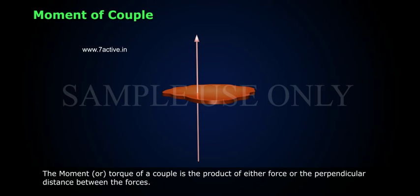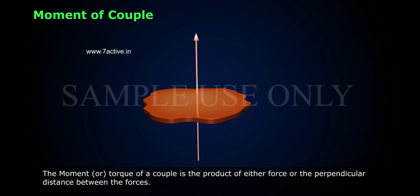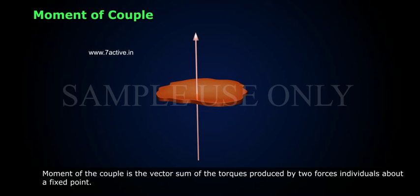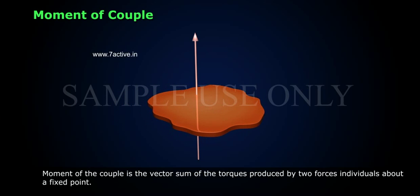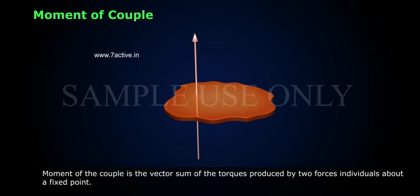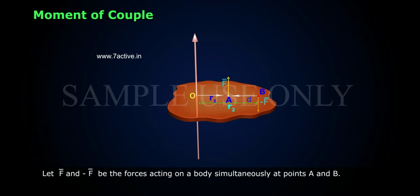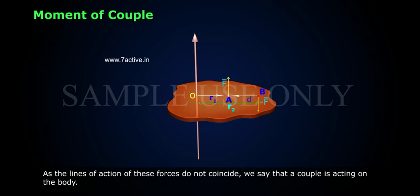While spinning a ball or a top, we produce a couple. Moment of couple: The moment or torque of a couple is the product of either force and the perpendicular distance between the forces. The moment of the couple is the vector sum of the torques produced by the two forces about a fixed point.